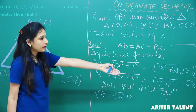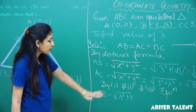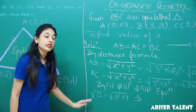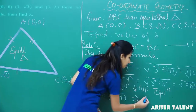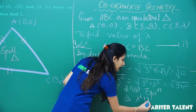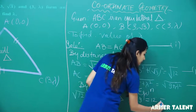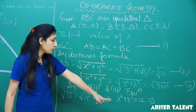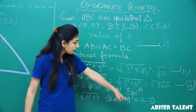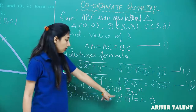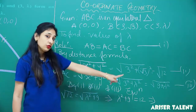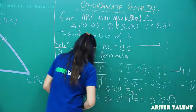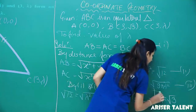Squaring both sides, λ² + 9 = 12, which gives λ² = 3. Therefore, λ = √3. So this is your answer.